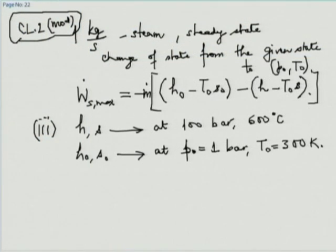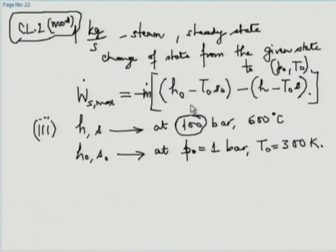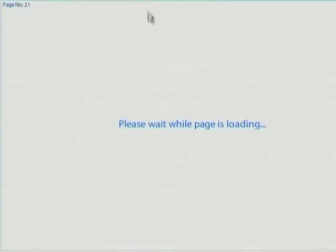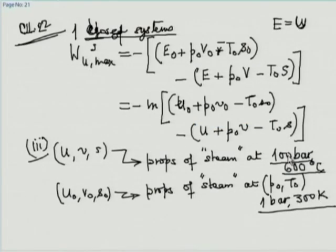NIT Trichy tells me the condition I was talking about as 100 bar 600°C is actually 10 bar 600°C. So I correct myself — this is not 100 bar 600°C, this is 10 bar 600°C — and I need to correct it on the previous page also, changing 100 bar to 10 bar there as well.